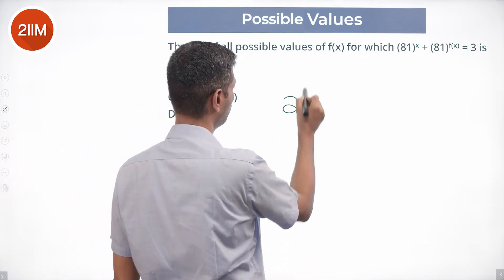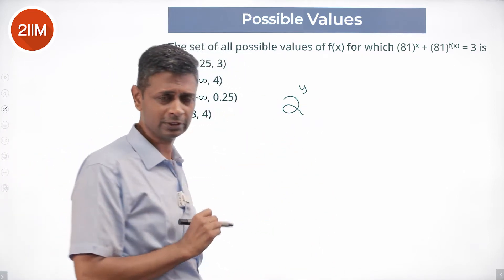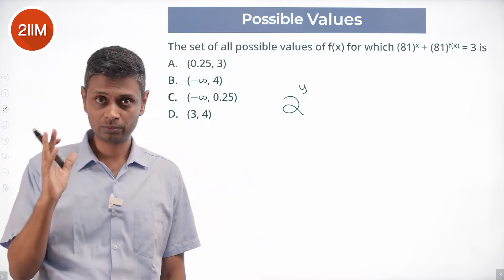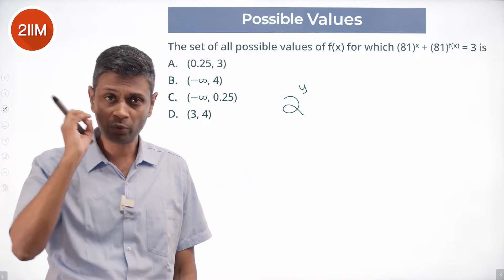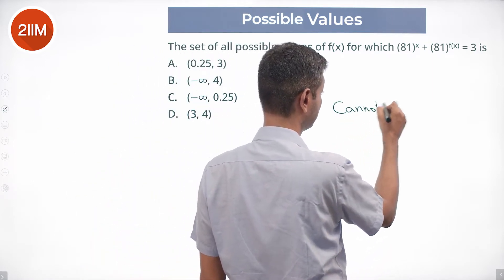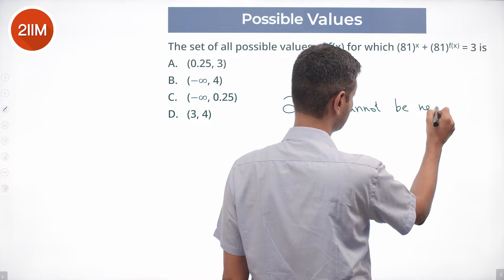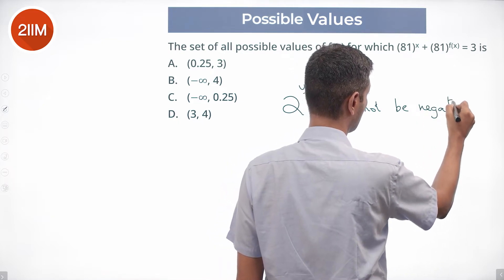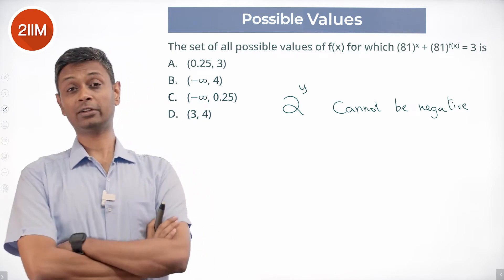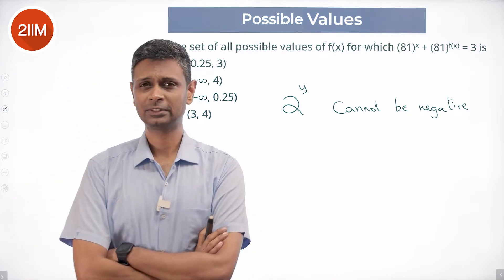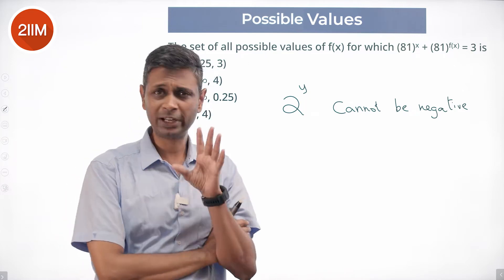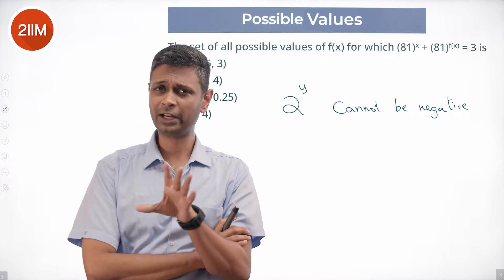Suppose I say 2 power y — just dealing with 2 power y. Y can take any value, but 2 power y cannot be negative. This is a super important idea, a very powerful idea: 2 power y cannot be negative.